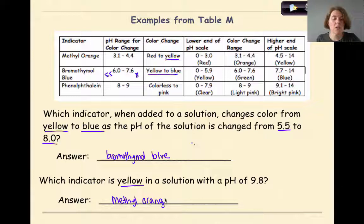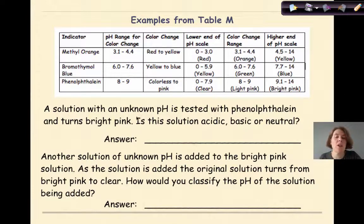A solution with an unknown pH is tested with phenolphthalein and turns bright pink. Is this solution acidic, basic, or neutral? So let's look at phenolphthalein. Phenolphthalein has a pH range of 8 to 9. So from 0 to 8, it's going to be colorless. And from 9 to 14, it's going to be pink. Lower end of the pH scale, 0 to 7.9, it will be clear. 8 to 9 is a light pink, that's our transition stage. And from 9.1 to 14, it's going to be bright pink. This says it's going to turn bright pink. That means if it's falling in the bright pink range, and that's 9.1 to 14, then this solution must be basic.